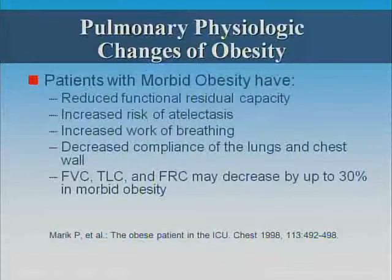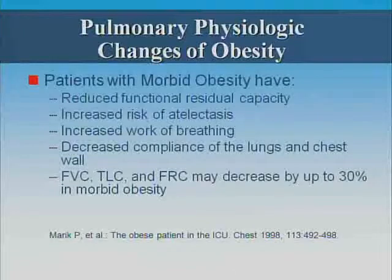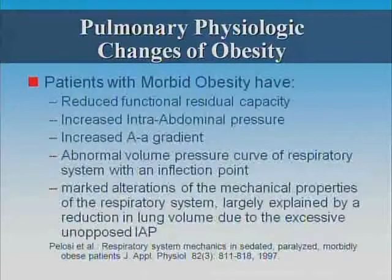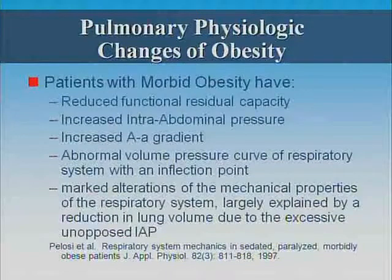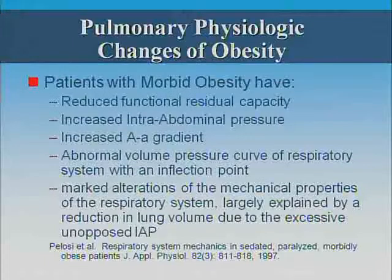There's no paucity of data on the respiratory changes in morbid obesity — a lot of it done pre-bariatric surgery and by anesthesiologists in the OR. We know with fairly good evidence that patients with morbid obesity have a reduced FRC, increased risk of atelectasis, increased work of breathing, decreased compliance, decreased vital capacity, total lung capacity, and FRC by up to 30%. Other studies have shown an increase in abdominal pressure, an increase in A-a gradient, and an abnormal pressure curve.